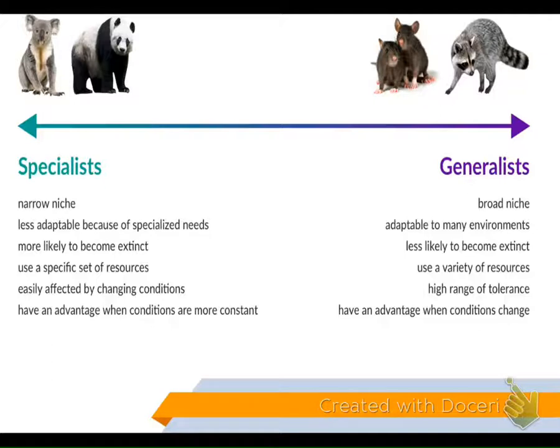Now let's look at specific things. The specialist has a narrow niche, whereas the generalist has a broad niche. The specialist has to live in the outback of Australia — for example, the koala bear — or the panda has to live in the bamboo area near Wuhan city in China. The raccoon and rat can live any place. Specialists have special needs: the koala has to eat eucalyptus leaves, the panda has to eat bamboo. They're more likely to become extinct if something happens to their food source due to fire or flooding from the Three Gorges Dam.